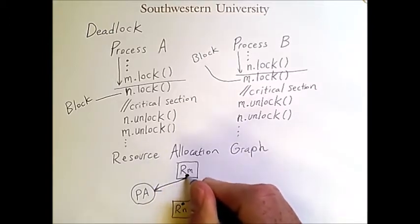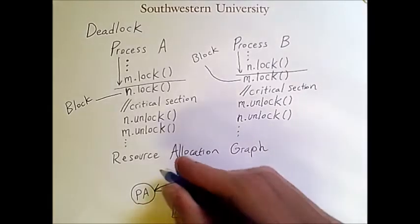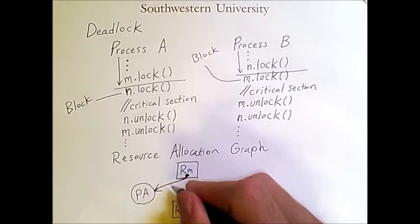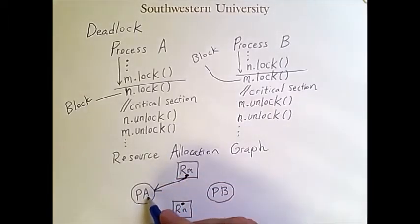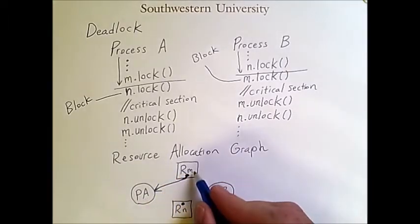And so when we have an arrow from a dot within a resource to a process, it represents that this process is holding this resource.